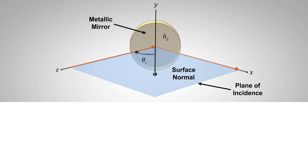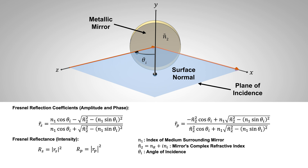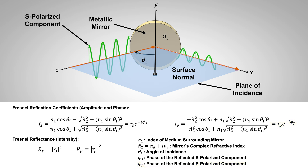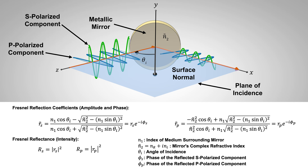The amount of s- and p-polarized light in the reflected beam is typically found using the Fresnel equations, which depend on the refractive index of the mirror as well as the angle of incidence. Since metal surfaces like silver have a complex refractive index, the phases of the reflected s- and p-polarized components are almost always different from each other. When the incident linear polarization state contains both s- and p-components, the phase difference will delay one component with respect to the other, often resulting in elliptically polarized light.